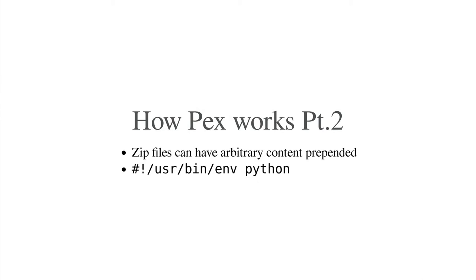So zip files can have arbitrary content prepended. In this case, you pretty much just have to prepend — sometimes you'll prepend a bit more — but you can literally just prepend '/usr/bin/python'. When you prepend a shebang, it runs Python with your text file, which is actually a zip file with arbitrary content prepended. It will add it to the path. There is some more magic that happens internally in PEX: if you have .so files, it will unpack them, put them in the right place, and fix up your sys.path.